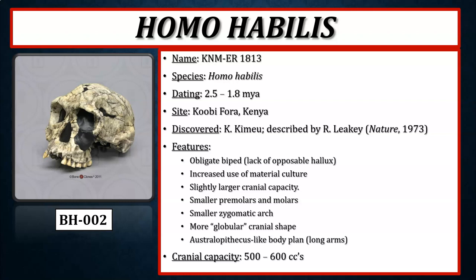That is the conclusion of the presentation on the australopithecines and early members of genus Homo. This correlates with chapter 9 of the Explorations textbook, chapter 9 of the Essentials textbook, or chapter 15 of the Biological Anthropology lab manual. The next presentation will focus on later members of genus Homo, essentially Homo heidelbergensis and onward.